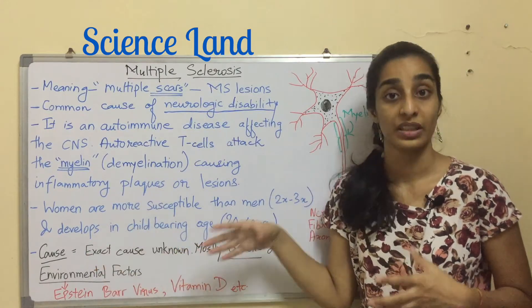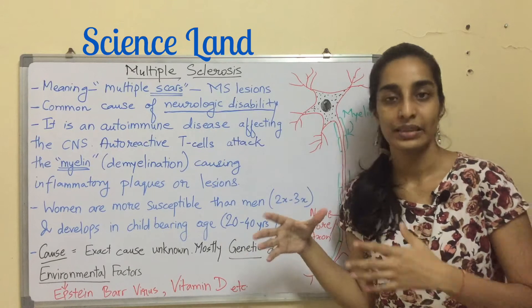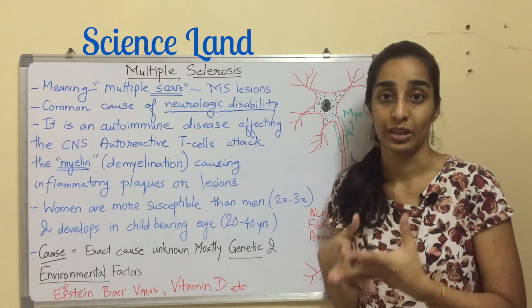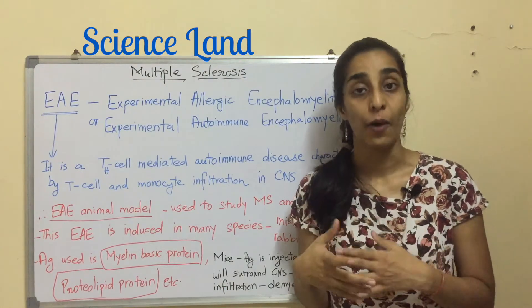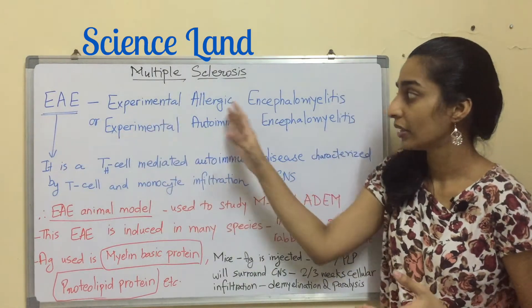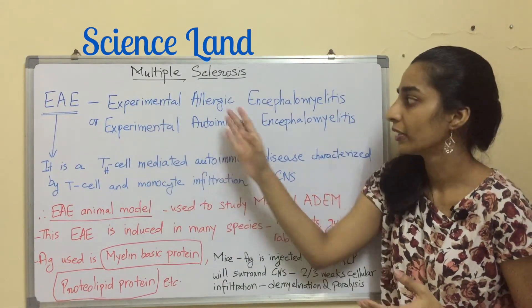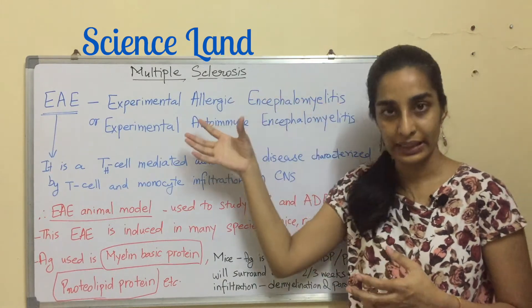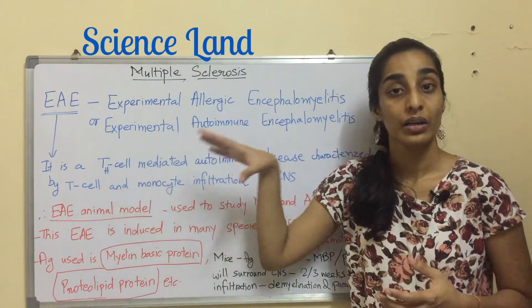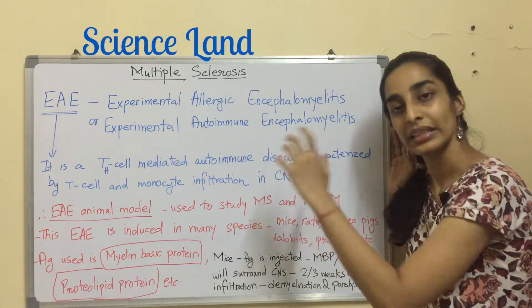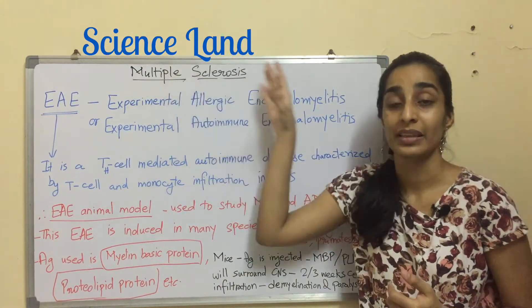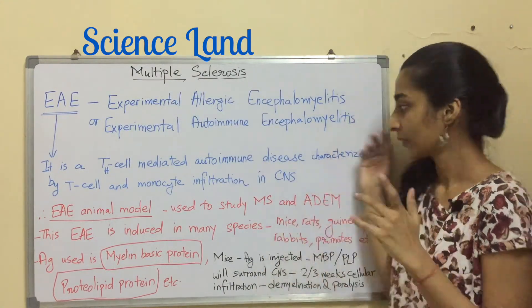Because the exact cause of the disease is unknown, scientists use certain models to study multiple sclerosis. There is a disease known as EAE — Experimental Allergic Encephalomyelitis, or Experimental Autoimmune Encephalomyelitis. It is a T helper (Th) cell-mediated autoimmune disease, mediated in the same manner as multiple sclerosis is mediated by T cells.